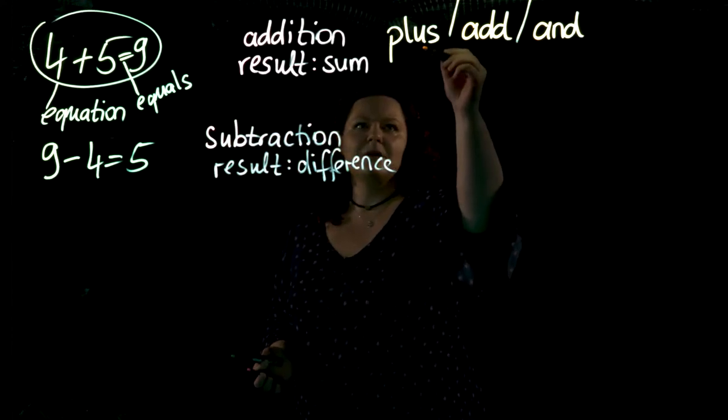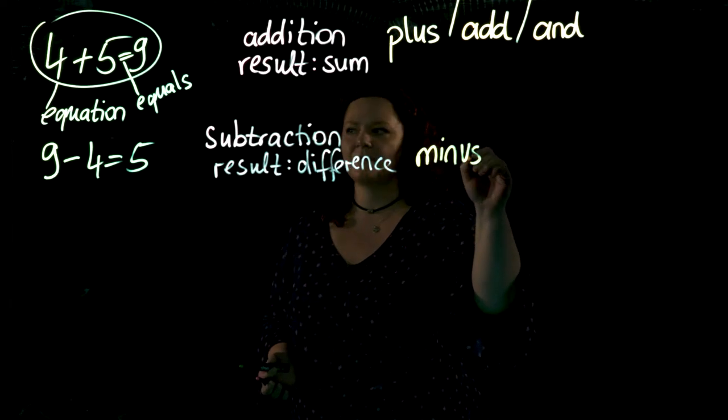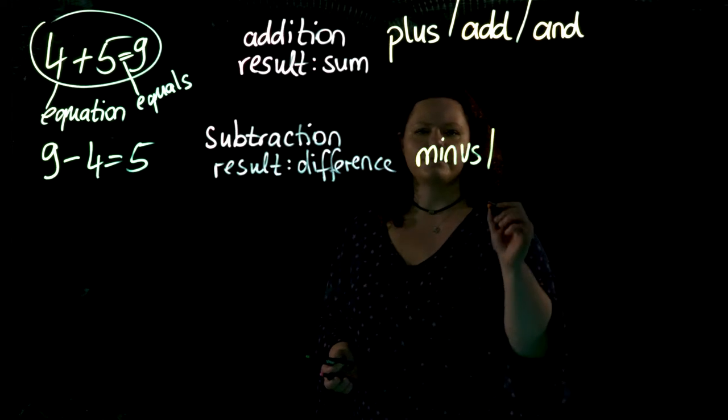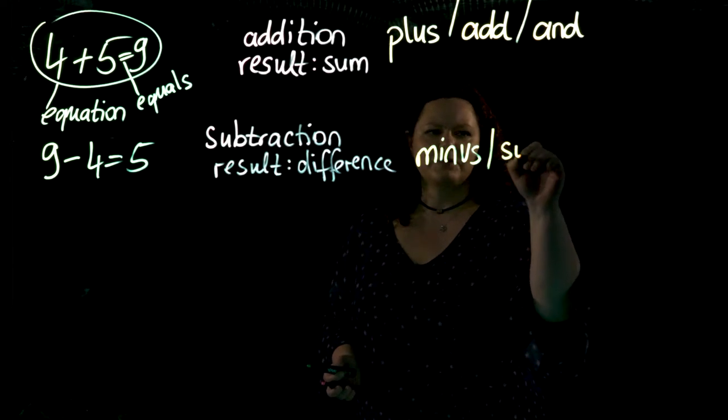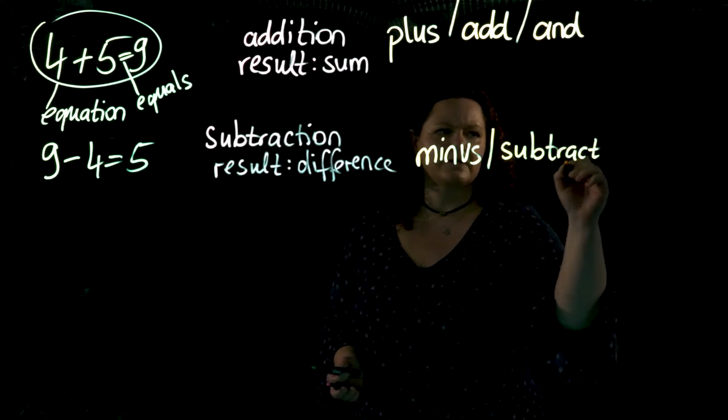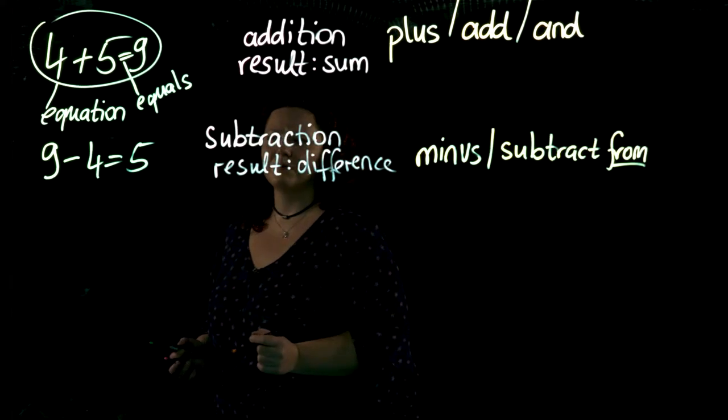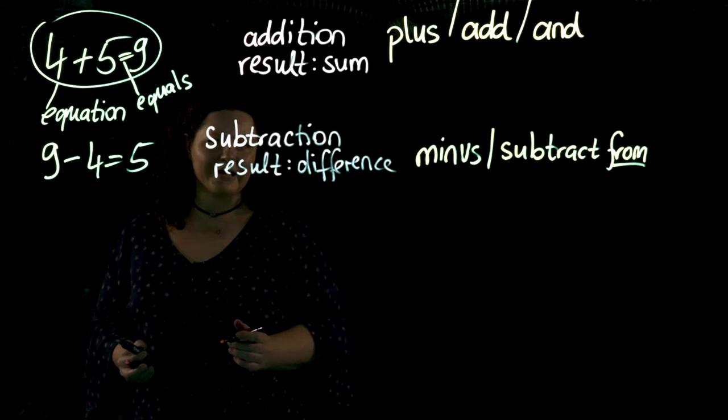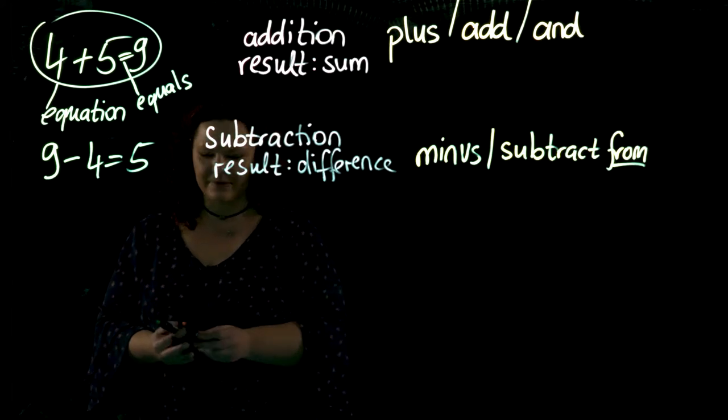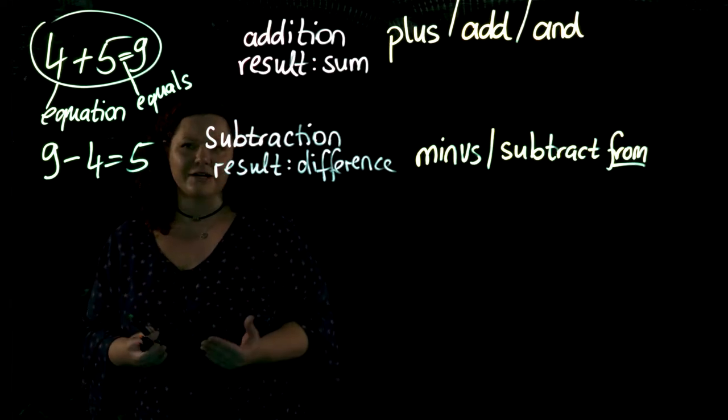The first way is similar to plus. We have minus here: nine minus four equals five. The other way is to say we subtract. Note the preposition: we subtract from. We subtract four from nine, and that gives us five as a result. This is what you learned in the first year at school.